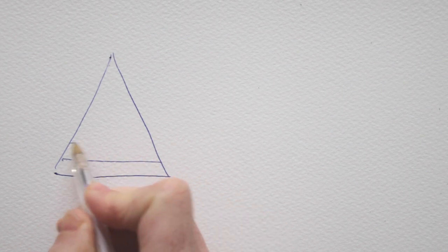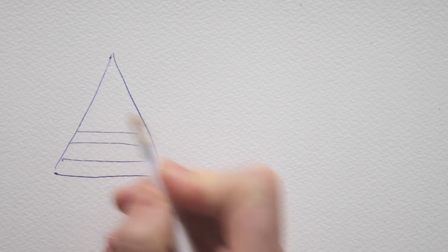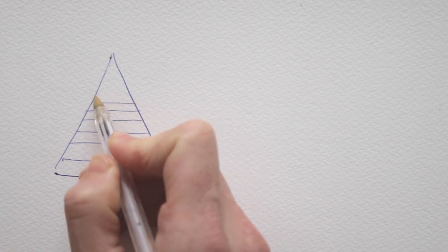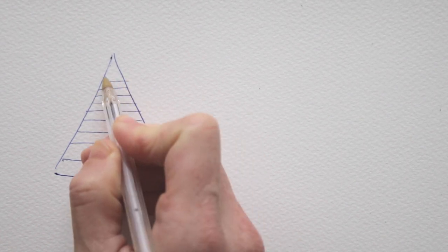This looks like a simple triangle, right? But if you draw lines that are further apart from each other at the bottom and gradually closer to each other towards the top of the triangle, what happens then?